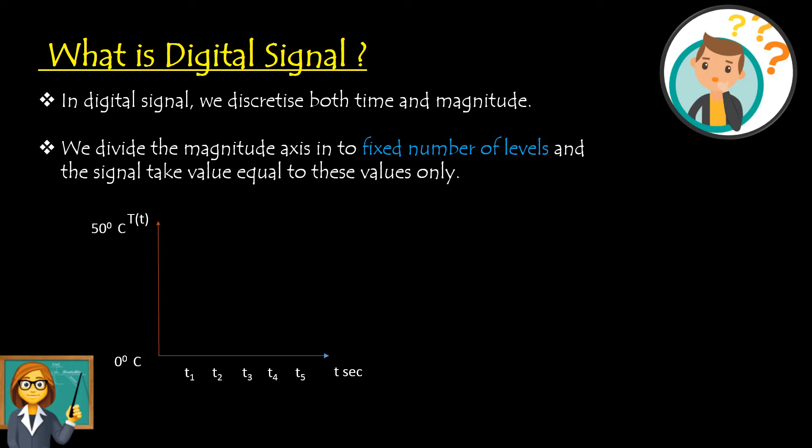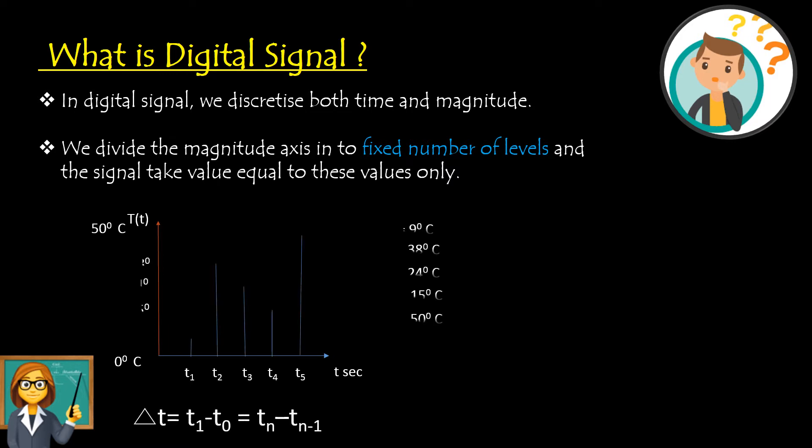With this, I can say that I am going to speak about a discrete time signal, having the collected data as 9°C, 38°C, 24°C, 15°C, and 50°C of temperature for different time intervals. With these 5 data points, I have plotted the graph. As you can see, it still looks like a discrete time signal (DTS).